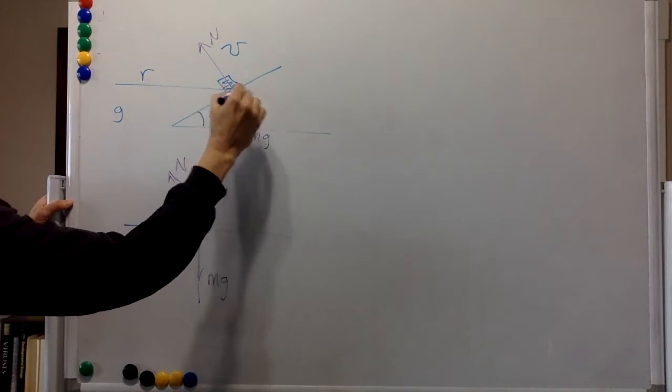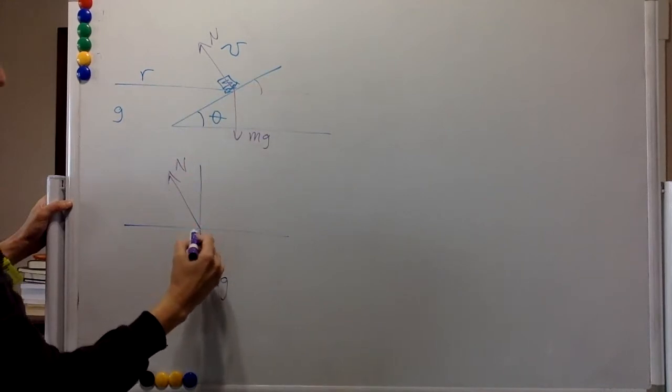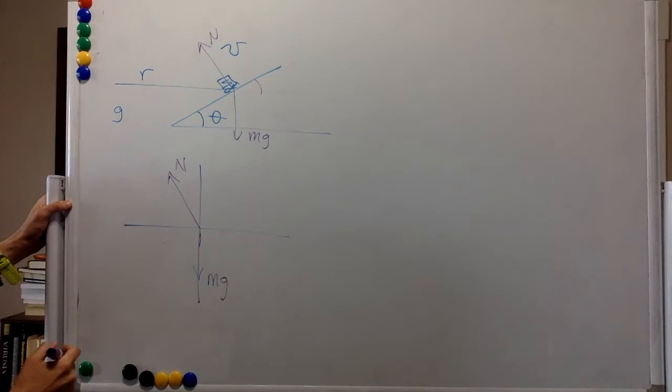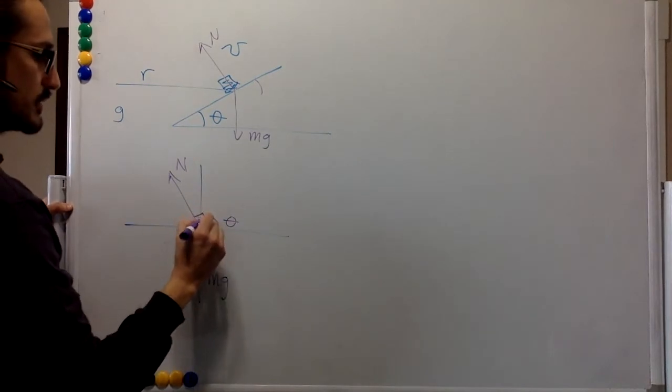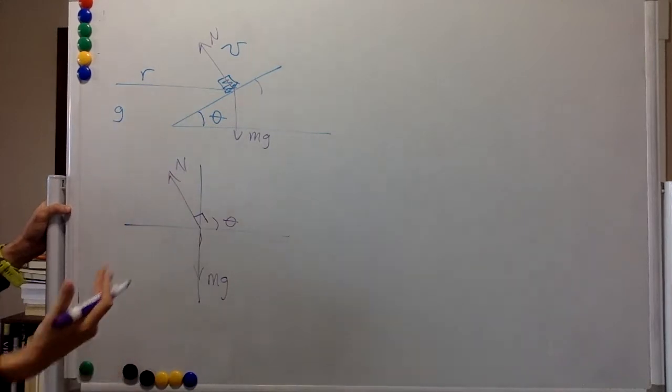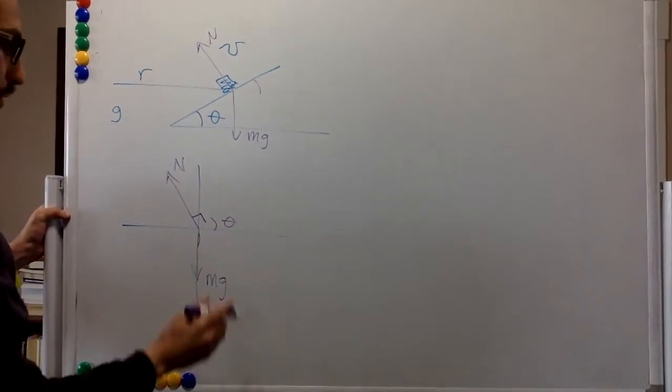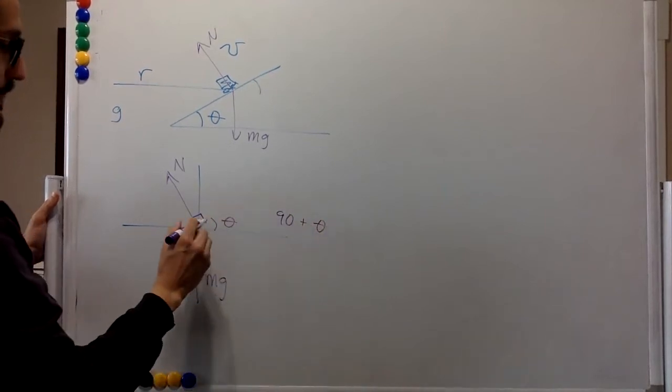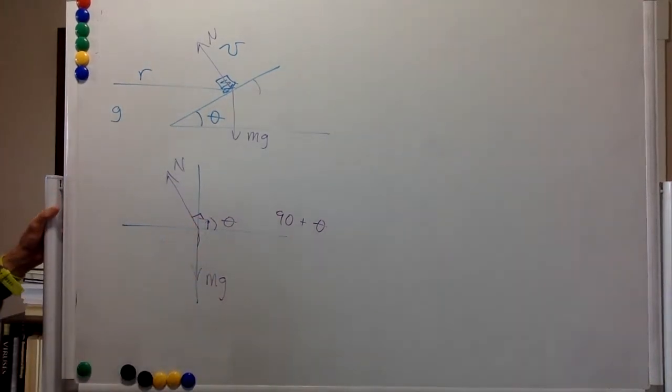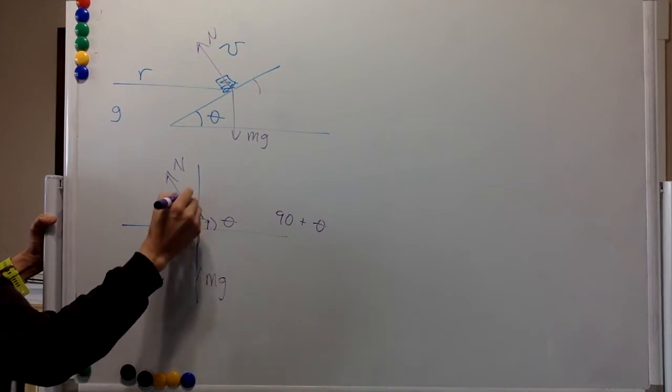So it makes an angle of theta over here. This angle is 90 degrees because this is the normal, so it is normal to this plane. And so this whole thing is 90 plus theta. And since this angle is also 90 degrees, it's an orthogonal system, then this angle over here is going to be theta.